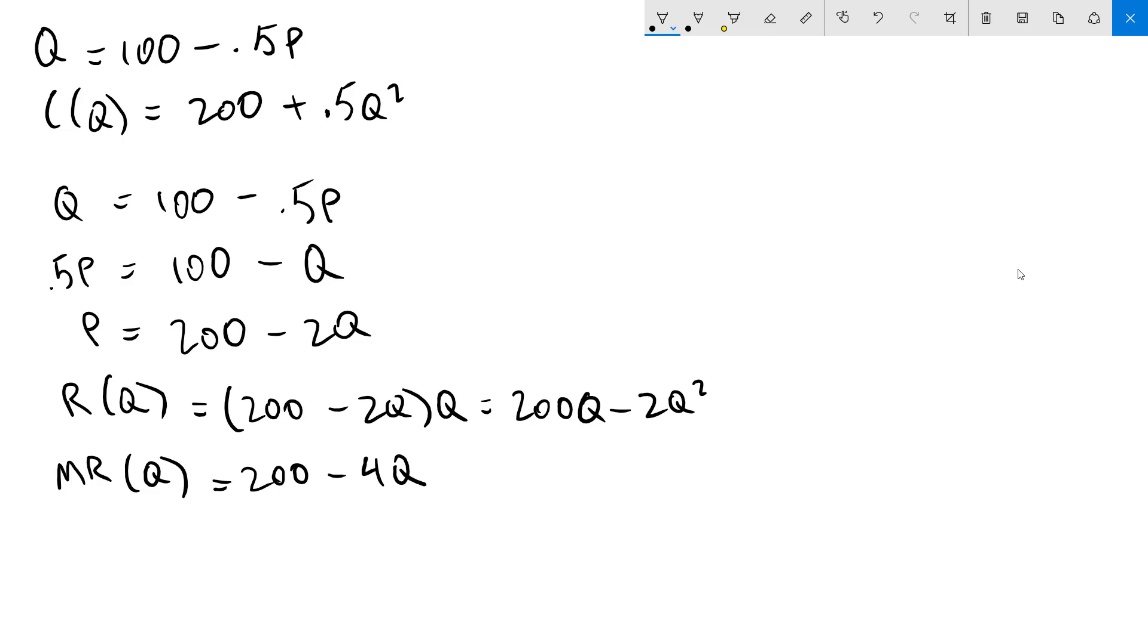To get my marginal cost function I'll simply take the first derivative of the cost function. The derivative of 200 is 0. The derivative of 0.5Q squared is Q.